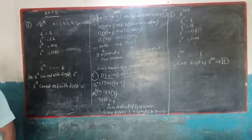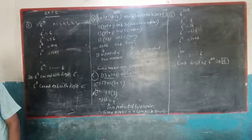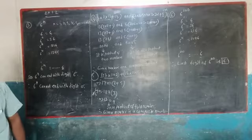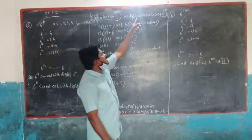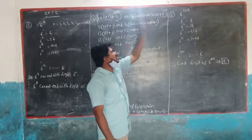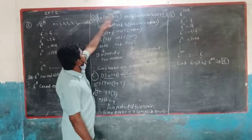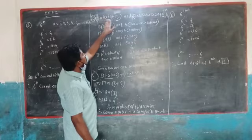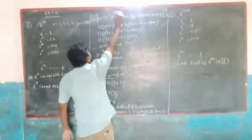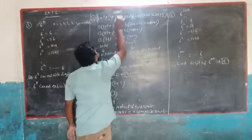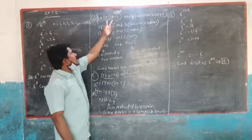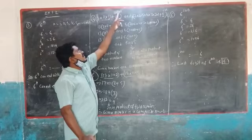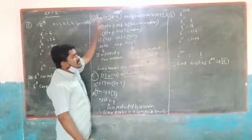The definition of a composite number: if a number has 3 or more factors, we get a composite number. Now we are given 7 into 11 into 13 plus 13. Here 7 into 11 into 13 is one term and 13 is the other term. So 13 is common between both terms — 13 is the common number.